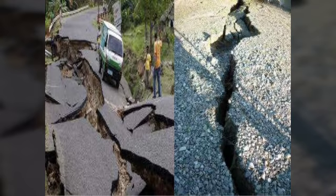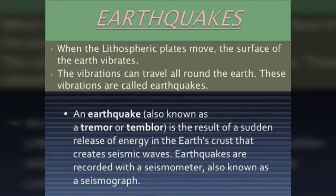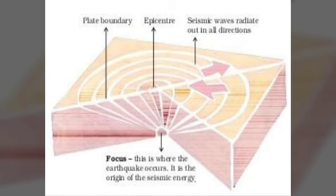Similarly, when the lithospheric plates move, the surface of the earth vibrates. These vibrations can travel all around the earth and are called an earthquake. The place in the crust where the movement starts is called the focus, and the place on the surface above the focus is called the epicenter. Vibrations travel outwards from the epicenter as waves, and the greatest damage is usually closest to the epicenter. The strength of the earthquake decreases away from the center.